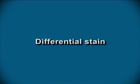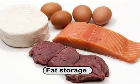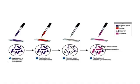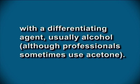Differential staining involves the usage of two or more stains and sometimes also involves heating. Such staining techniques help in differentiating between different parts of a cell, for example areas of fat storage, and can also differentiate various groups of bacteria, for example between gram positive and gram negative bacteria as shown in figure 4. The reaction of bacteria to gram staining is a consequence of differences in the chemical structure of the bacterial cell wall and is a key feature in their identification. The basis of gram staining is the ability of the cell to get stained with crystal violet and to retain the color when treated with the differentiating agent, usually alcohol, though sometimes acetone is used.